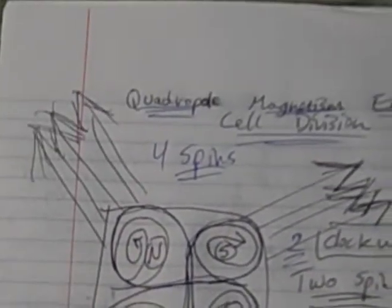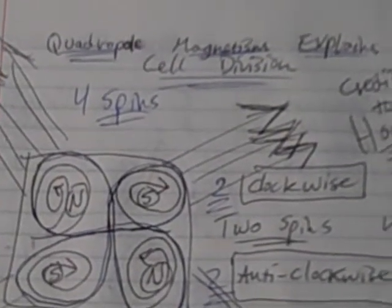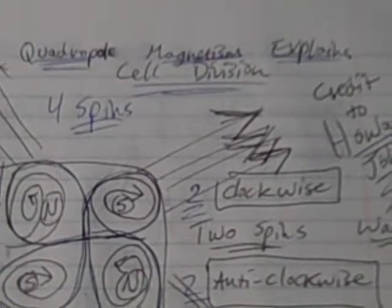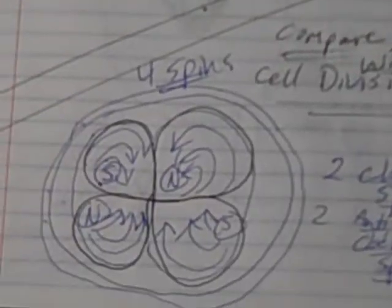So, that's my theory that magnetism is quadrupole, and if it is, that this can explain cell division. There's one, there's the other. Wow, that's interesting. Thanks.